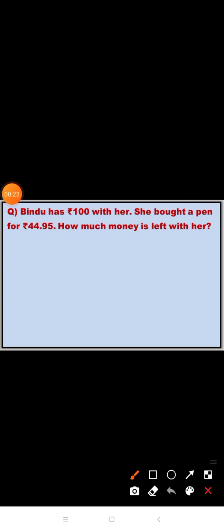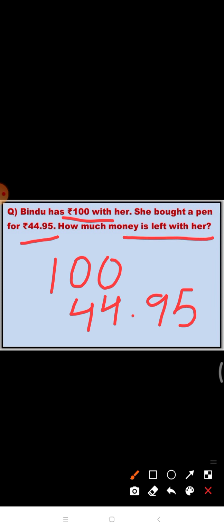Question is, Bindu has rupees 100 with her. She bought a pen for rupees 44.95. How much money is left with her? So in first part of the sentence, what is given? Total amount is given. So total amount with Bindu is rupees 100. She bought a pen for rupees 44.95. So amount spent on pen is equal to 44.95. Now, we have to find out how much money is left with her. So what we have to do? We have to do subtraction.